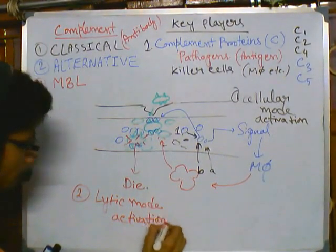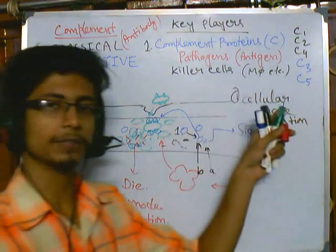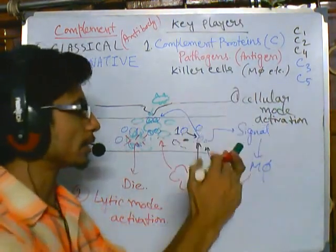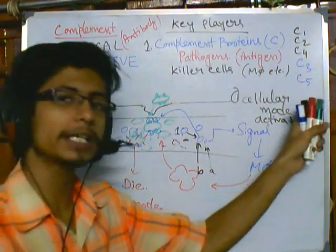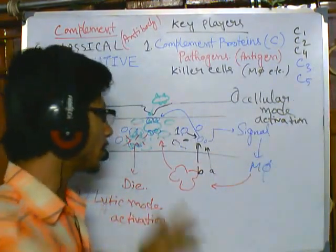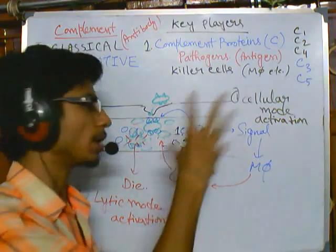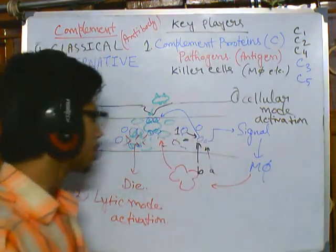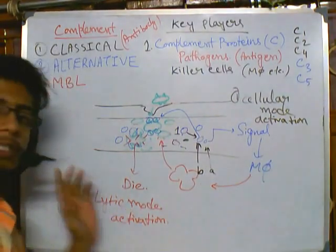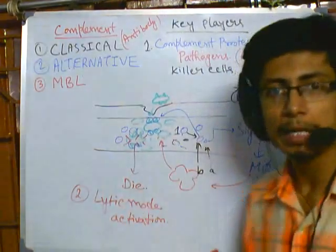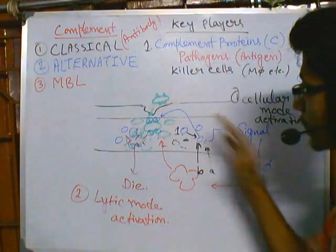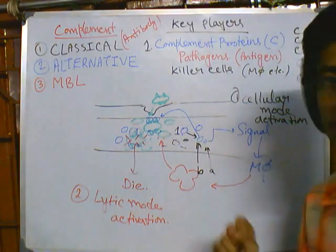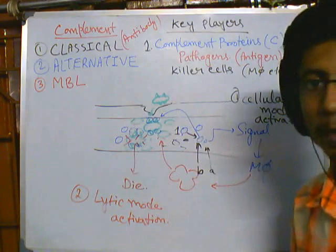So two modes can be there: one is the lytic mode, and another is the cellular mode activation, or phagocytic mode activation. When the phagocytic mode is activated, it requires other cells like macrophages and dendritic cells to come and do the job. When activating the lytic mode, the complement system does the job on its own. This is a very important basic concept you must learn before we discuss the pathway in a detailed manner. Now let us talk about the classical pathway in detail.